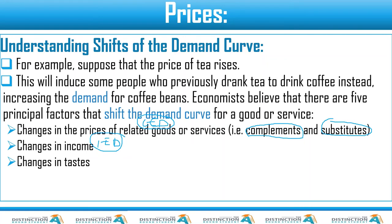The next one is the change in consumer tastes. Consumers may begin to like something or begin to dislike something. Nowadays, it may be influenced by social media. Consumer tastes may change because of influence from celebrities or role models — those may ignite a certain liking for something, and demand will either increase. If someone influential says something bad about a certain thing, it may also cause a shift of the demand curve to the left.